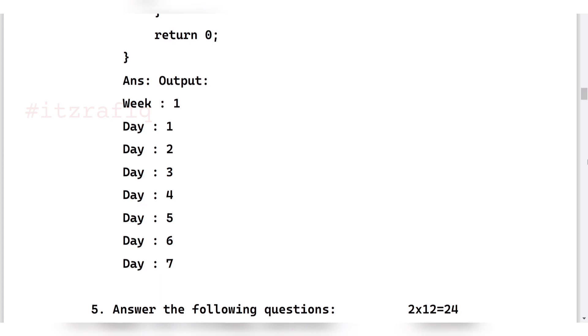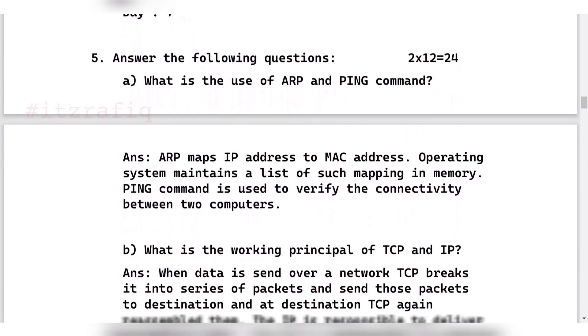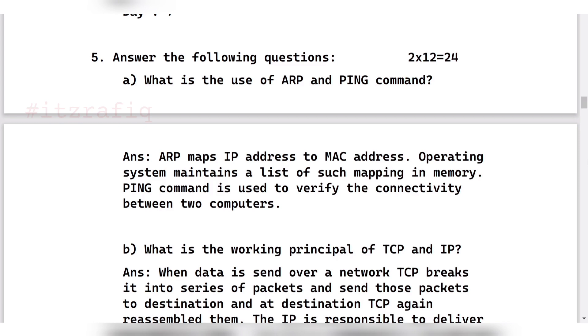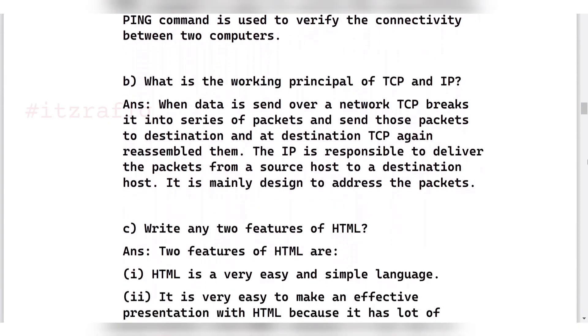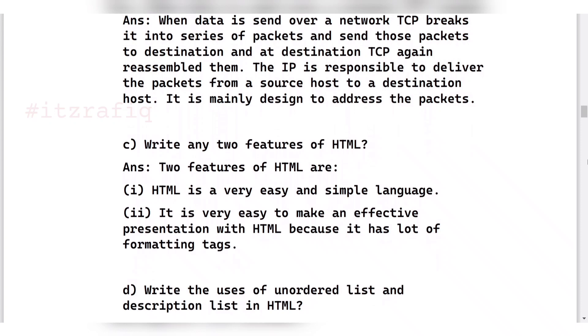Then number five questions - these are two marks questions, there are 12 questions. First one is use of ARP and ping command. ARP maps the IP address to MAC addresses and the operating system lists the mapping of this. Ping command is used to verify connectivity between two computers. Principle of TCP and IP: TCP is used to break down packets into several pieces and transfer them over a network, and IP is responsible to transfer the packet to the destination.